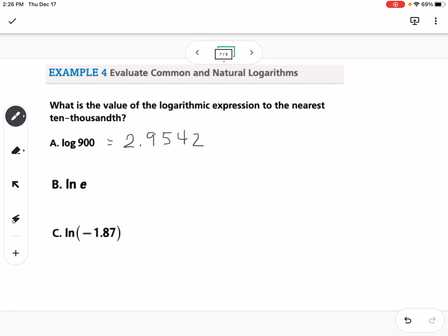If you type in natural log of E, that's like saying E to the what power equals E, so that would be 1, that's what you should get. And then if you type in natural log of negative 1.87, you should get no solution, it should tell you an error in your calculator.